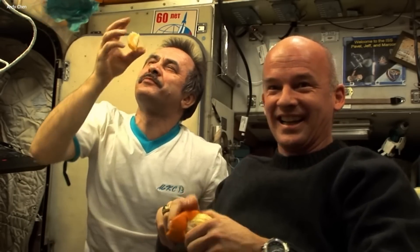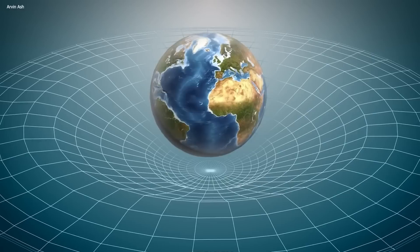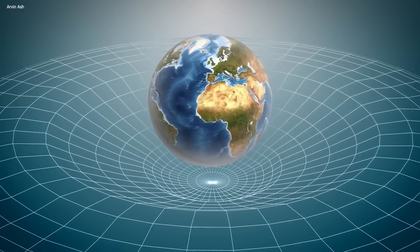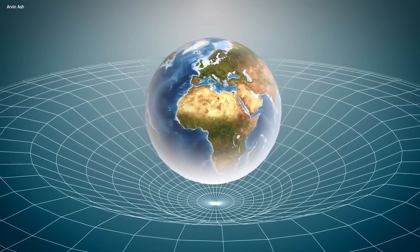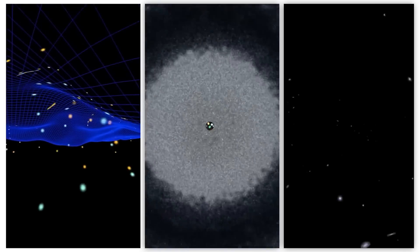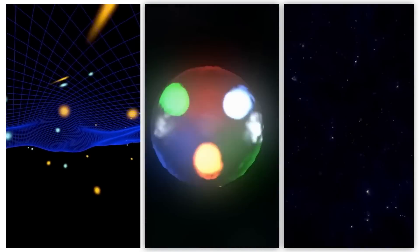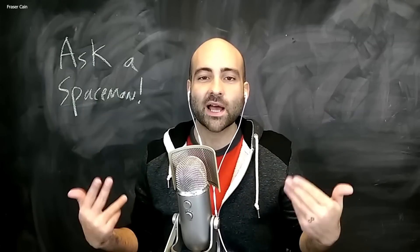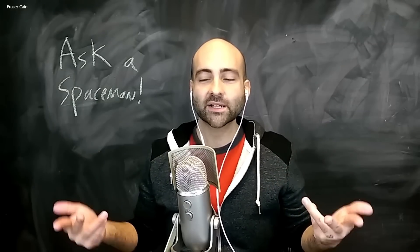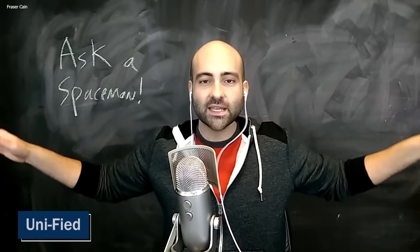Imagine a universe where everything is weightless and just floats around like a feather in the wind. Sounds pretty surreal, right? Well, that's exactly what our universe would be like if it wasn't for the Higgs field. In order for particles to have mass, they need to interact with the Higgs field, which permeates all of space. Without the Higgs field, particles would be massless, and the universe as we know it would be very different, because it wouldn't be, you know, unified.